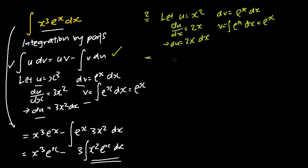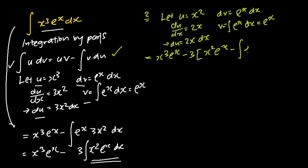I apply the integration by parts formula to move on to the next step. I get the following: I'll first copy the first term, and then for the second term, I will apply the integration by parts formula. My u is x squared, my v is e to the power of x, subtracting away the integral of v, which is e to the power of x. My du is 2x dx. Then I simplify the whole problem and get something like this.